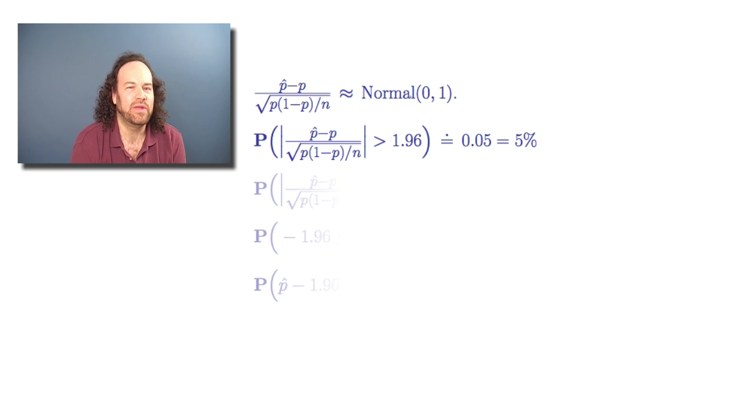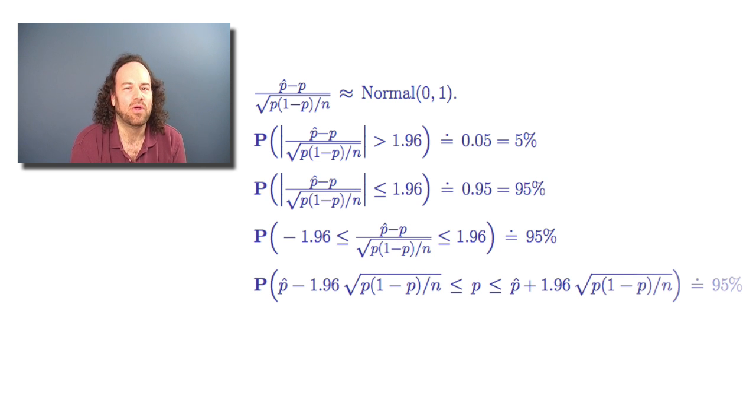Now when we rejig this and work it all around, we end up by concluding that the probability that p is between p-hat minus 1.96 times the square root of p times 1 minus p over n, and p-hat plus 1.96 times the square root of p times 1 minus p over n, is about 95%.